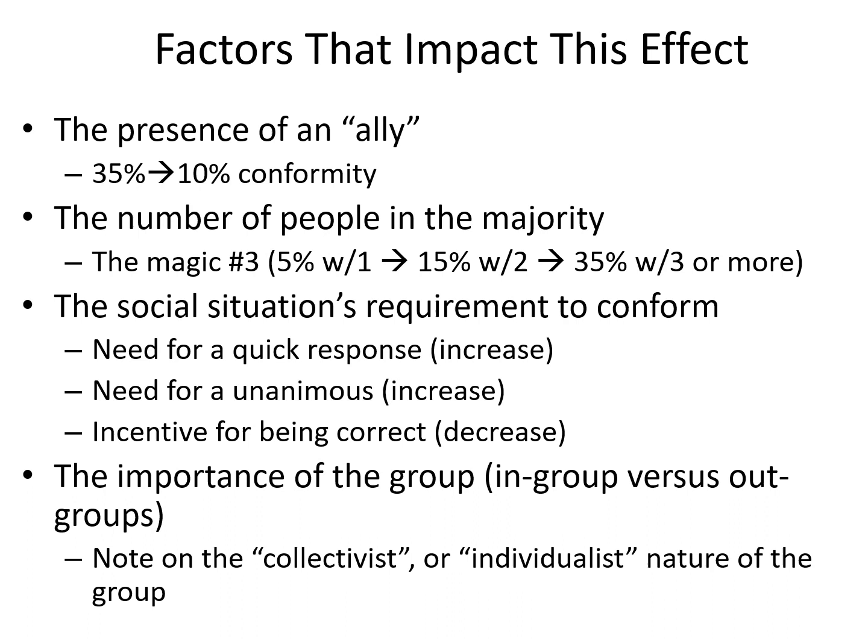He found that if somebody was paired with one individual consistently giving the wrong answer, people almost never went with that single individual. When paired with two individuals giving incorrect responses, conformity levels really weren't that much higher. But when three people gave the wrong response before the true participant's turn, Asch found the same amount of conformity as if he had eight, ten, or twenty people giving the wrong response. That magical effect has been replicated in other studies: you need a unanimous majority of at least three people for maximum effect, but once you pass that, everything else is superfluous.